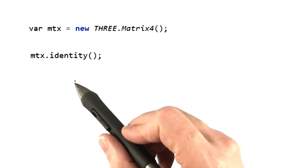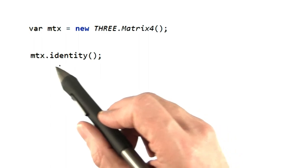If during processing we want to reset the matrix 4 to identity, we call the identity method on the object itself.